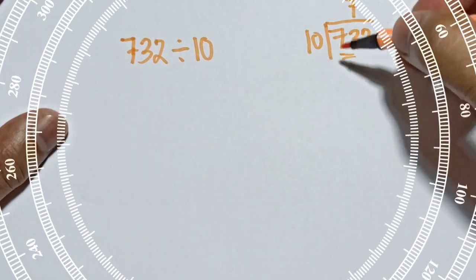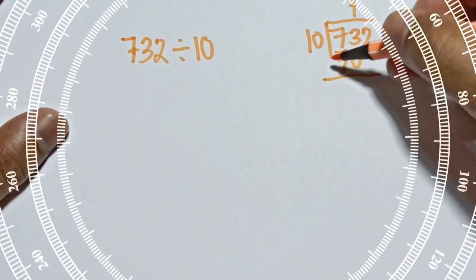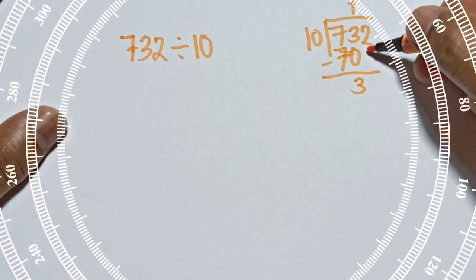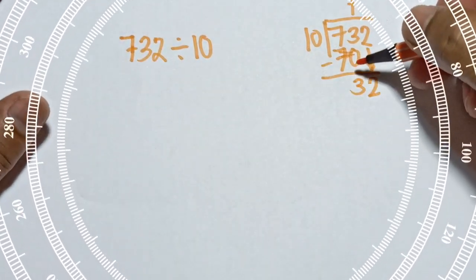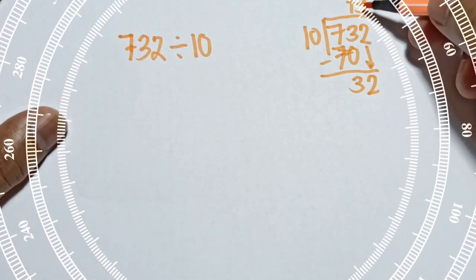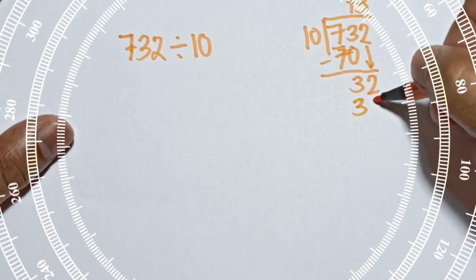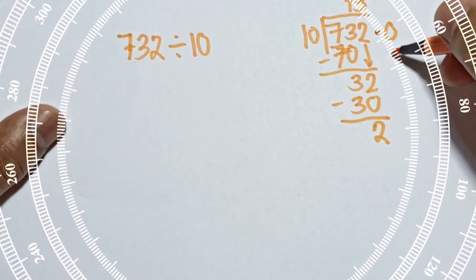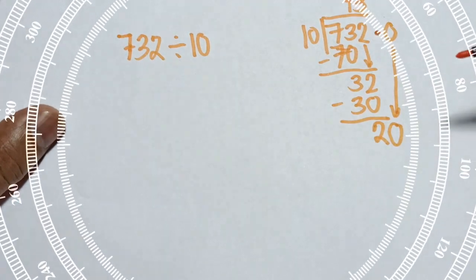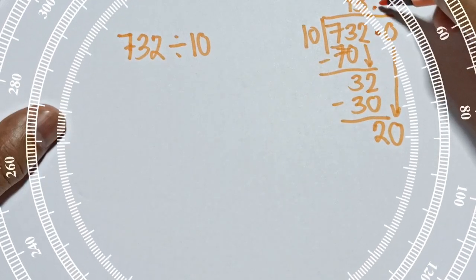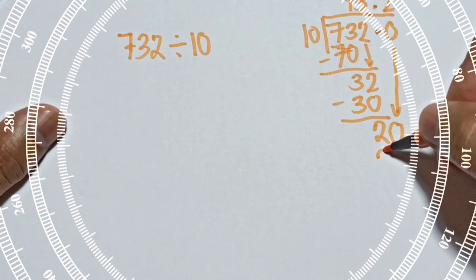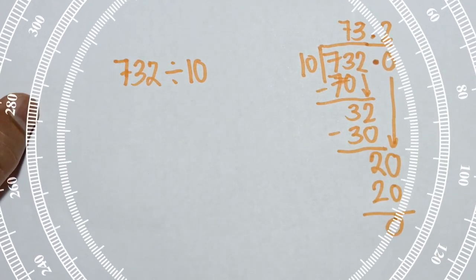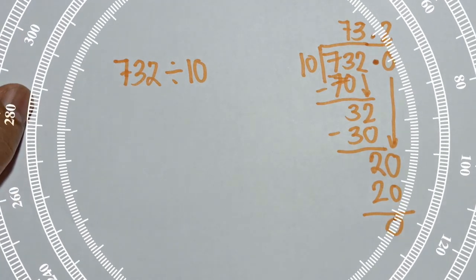How many 10s can you make from 73? You can make 7 tens — 7 times 10 is 70 — then 73 minus 70 is 3, bring down 2 to get 32. You can make 3 tens out of 32, so 3 times 10 is 30, and 32 minus 30 is 2. Bring down a 0 to get 20, and you can make 2 tens out of 20 with 0 remainder. That is the traditional way, but it's too long.